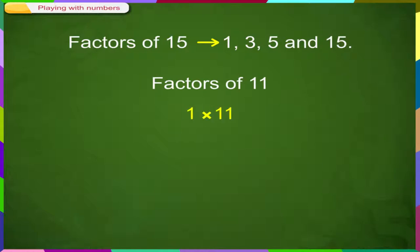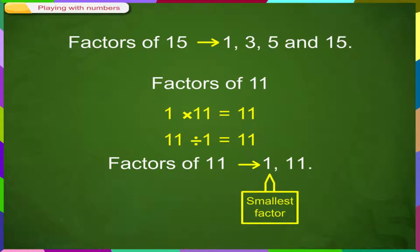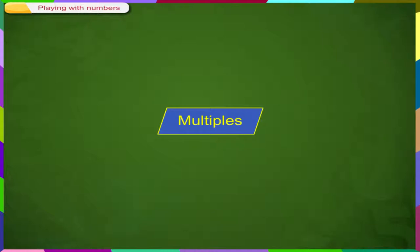Let us find the factors of 11. 1 into 11 is equal to 11. 11 divided by 1 is equal to 11. 1 and 11 are the factors of 11. 1 is the smallest factor and 11 is the biggest factor.